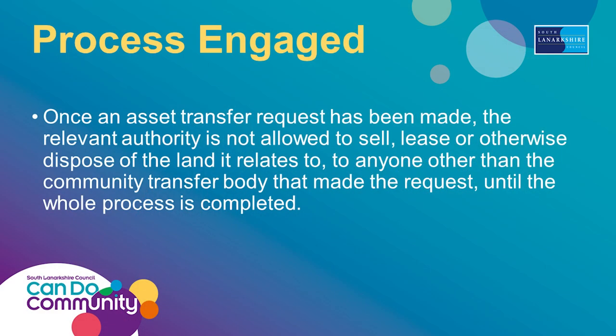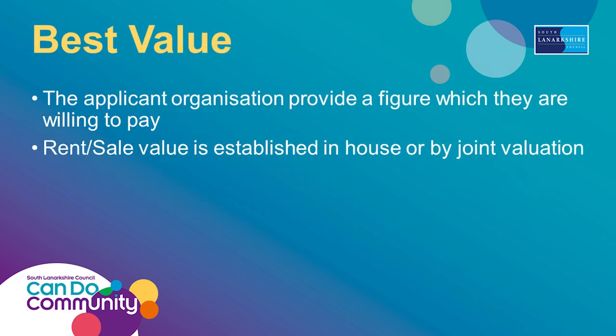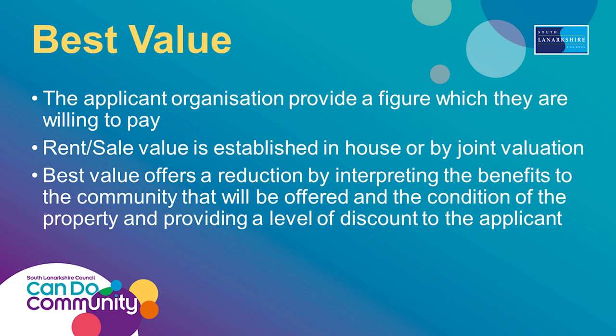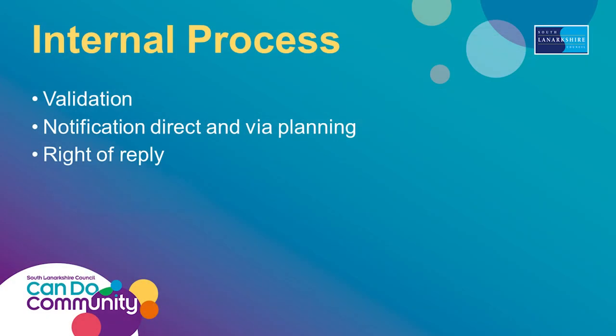Once the process is engaged, we are then unable to negotiate, sell, or lease the property to any other party whilst the negotiation is taking place. Best value is an important consideration — we have to ensure that public assets are used in the best manner for the public we serve. The group will give an indication as to how much they are willing to pay for a lease or purchase. We will look at the viability of this, and if it's a purchase we'll do a joint valuation and negotiate the price. If it's a lease, you can offer evidence as to how what you're doing will improve things for the community, and this in turn can give a discount on the lease value. Once you submit the application, we validate it and notify you that we've accepted it — that sets the clock running and we have a six-month period to go through the process.